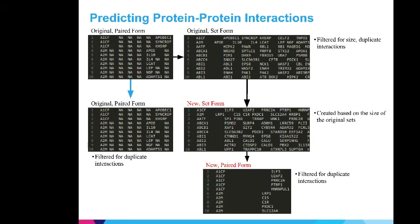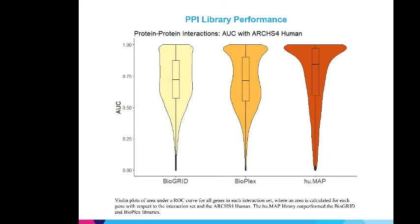In order to predict protein-protein interactions, I began with the original paired form. Each row signifies a pair of protein-protein interactions. I converted this into the GMT format file and used the same method to predict a new GMT format file of protein-protein interactions. Then I converted this back into the paired form and compared the original and new paired forms. When I measured the performance of these three libraries, Humap outperformed both the Biogrid and Bioplex networks. The performance of all three above 0.5 indicates that protein-protein interactions are more correlated with co-expression datasets.